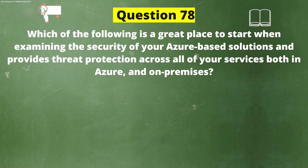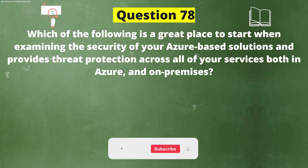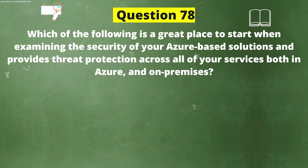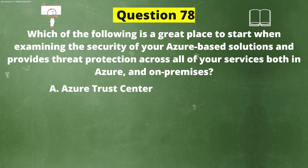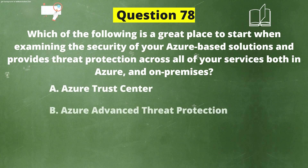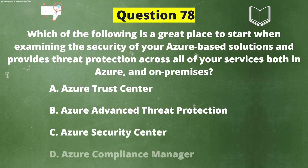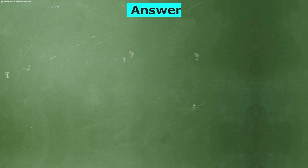Next question: Which of the following is a great place to start when examining the security of your Azure-based solutions and provides threat protection across all of your services both in Azure and on-premises? Option A: Azure Trust Center. Option B: Azure Advanced Threat Protection. Option C: Azure Security Center. Option D: Azure Compliance Manager. The correct answer is Option C, Azure Security Center.